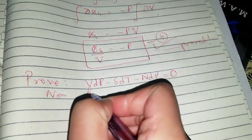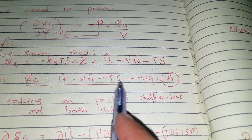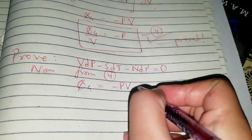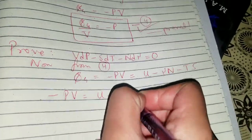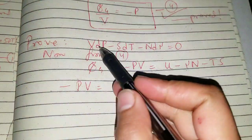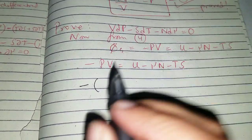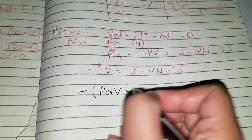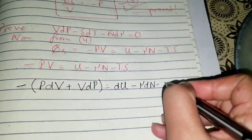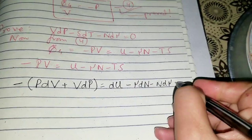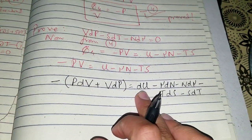Now for the second part, from equation 4 we have Ψg = -pV. We also have Ψg = U̅ - μN̅ - TS. Equating these: -pV = U̅ - μN̅ - TS. We take the total differential on both sides.